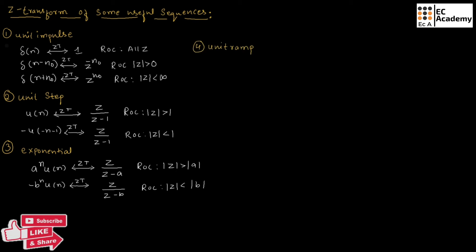Next let us understand the unit ramp function. It can be represented as n times U of n. The Z-transform for this function will be Z divided by Z minus 1 whole squared. Here ROC will be magnitude of Z greater than 1.